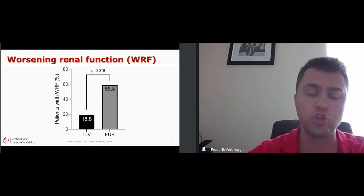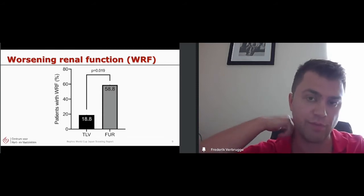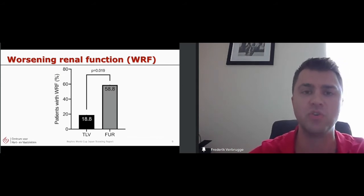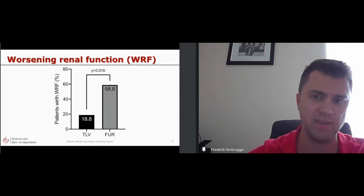Then the authors also observed that the serum creatinine increased more in the furosemide arm than in the Tolvaptan arm. And when they defined worsening renal function, as is conventionally done in a lot of heart failure studies, by rising serum creatinine of 0.3, then they saw a significantly higher incidence, up to two-thirds of the patients in the furosemide arm, while less than one in five in the Tolvaptan arm.